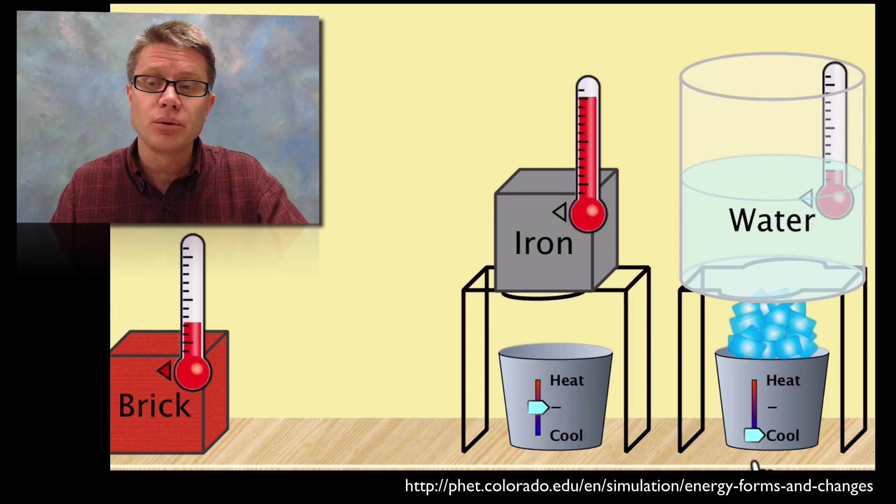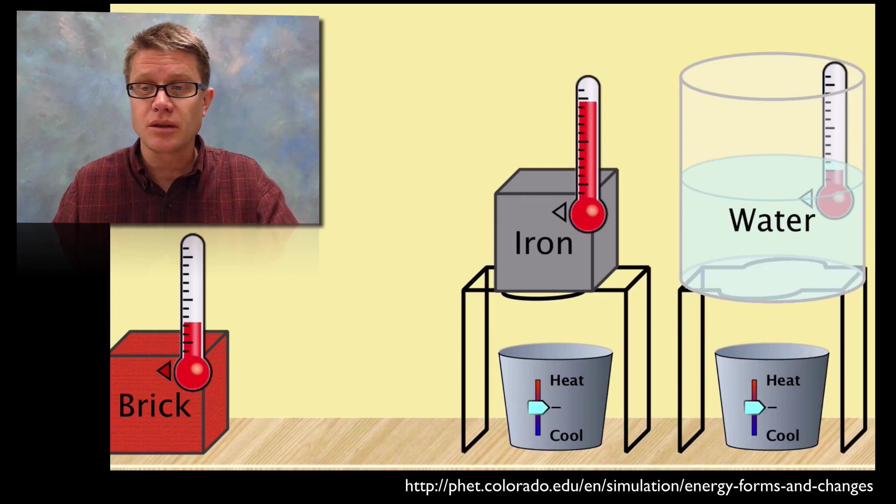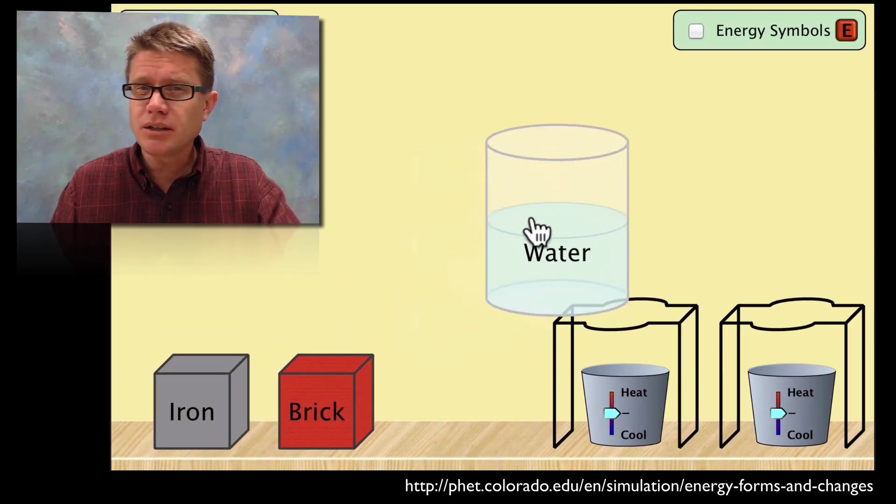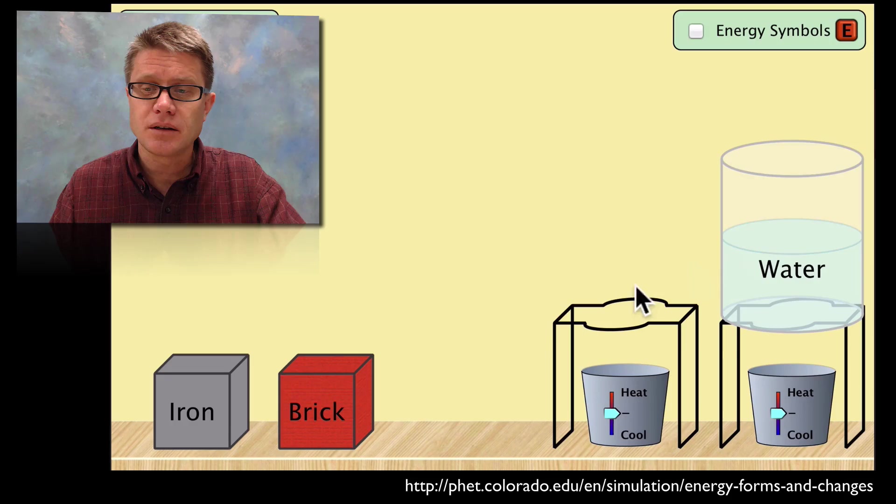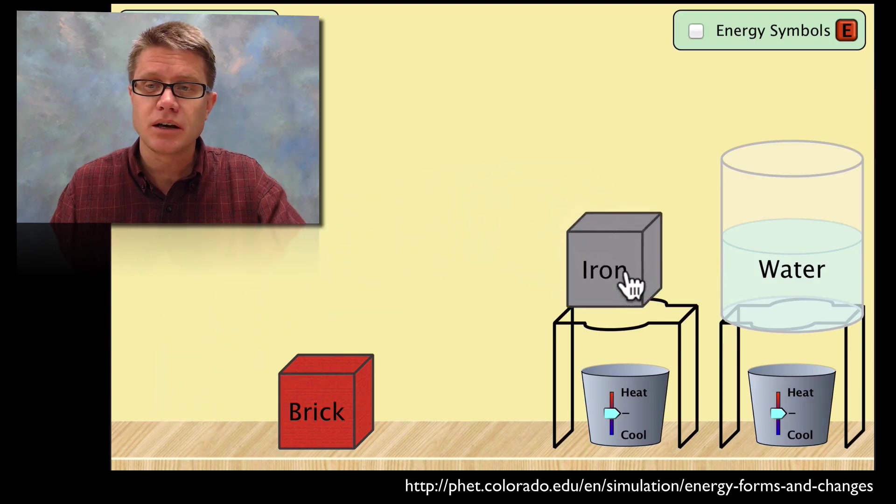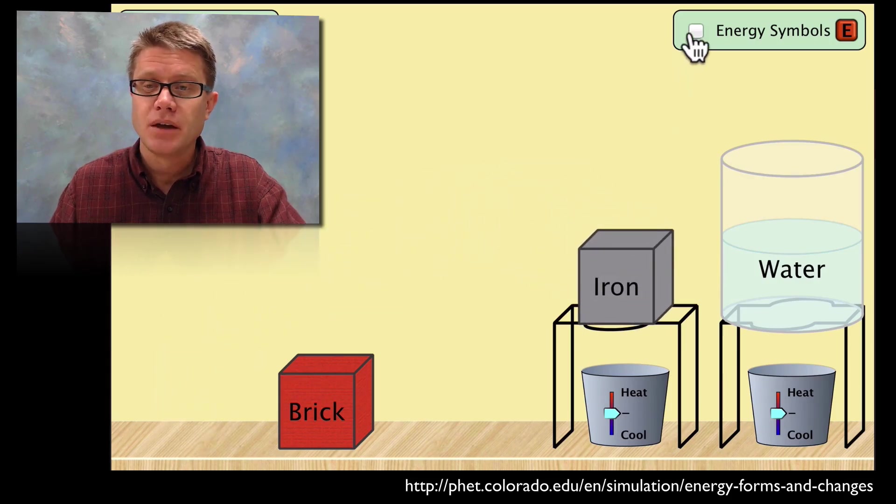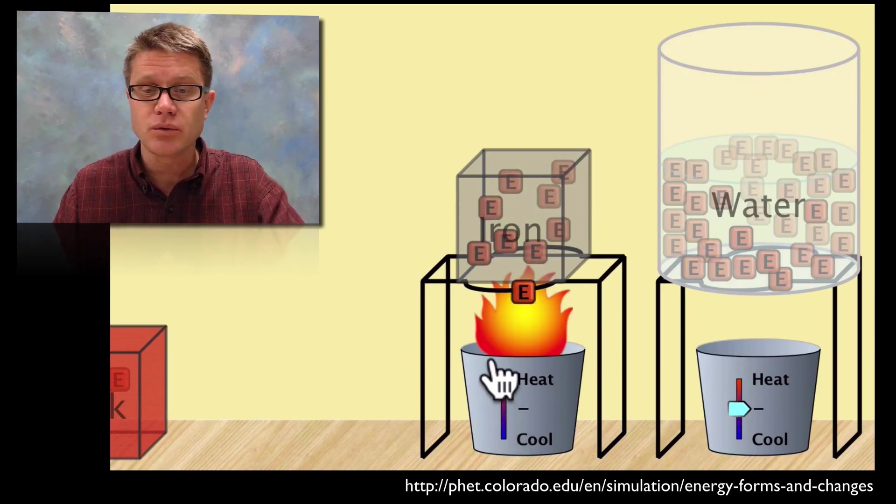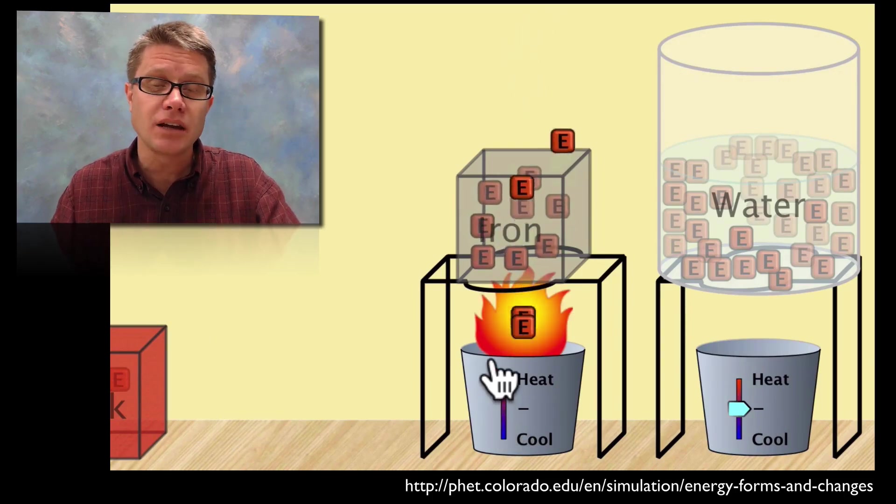That's speeding up the molecules of the thermometer. It's spreading apart. Likewise when we cool it down what we're doing is we're cooling down those molecules, cooling down the molecules of the thermometer, and therefore it's going down. But we really don't see that energy transfer as heat. And so now what we're going to do is click on the energy symbols button. And now we're actually going to see that energy inside those molecules.